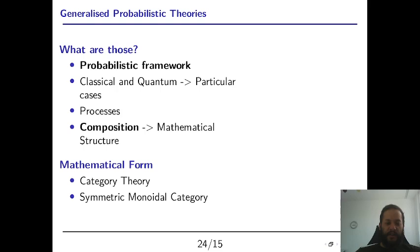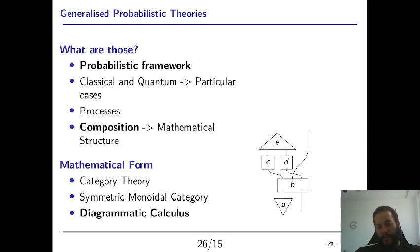And this mathematical form is given by category theory, or more specifically by symmetric monoidal categories. And this is very nice because these categories are equipped with a diagrammatic calculus where the mathematical objects are diagrams such as this one. And then we can make formal mathematical calculations while at the same time having this very significant notation where everything has a very clear meaning to us.